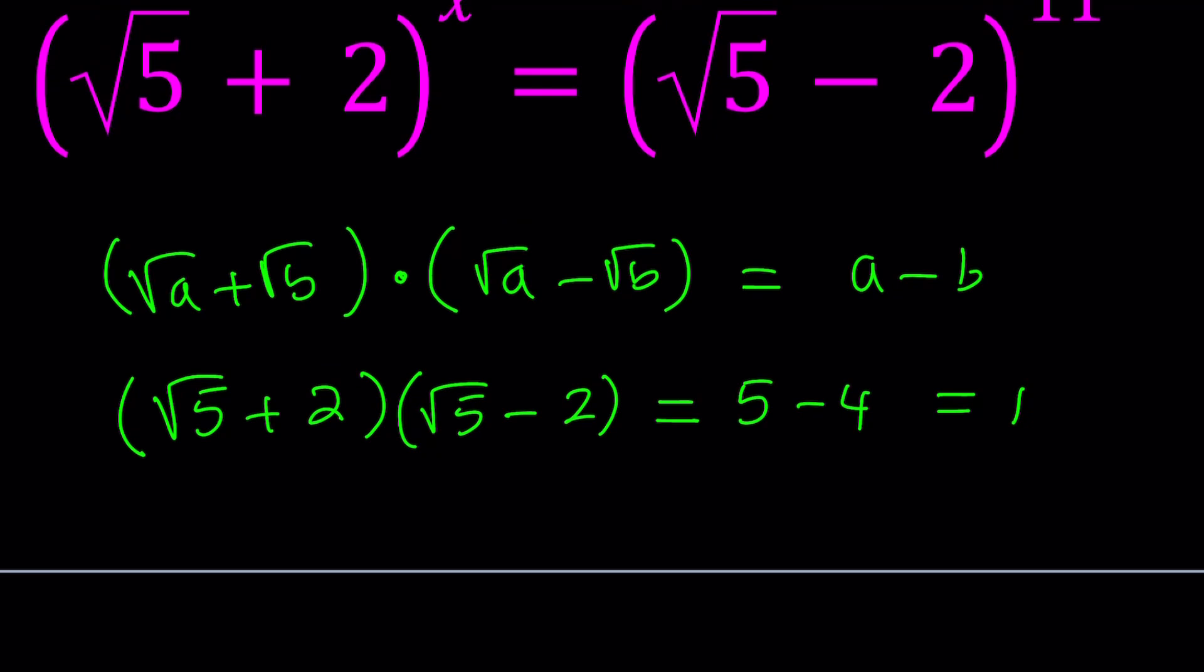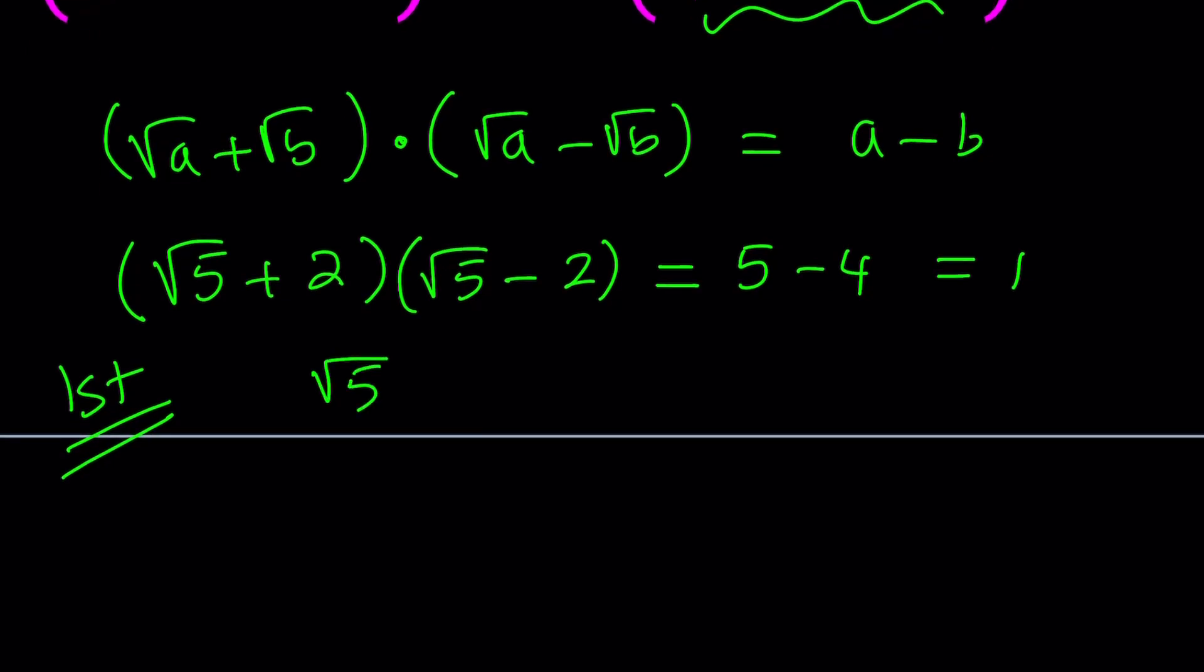Now, we can use that fact to our advantage. This is going to be our first method, basically. Let's go ahead and write one of these in terms of the other. I'm probably going to change this one. So let's isolate root 5 minus 2 here. We can write it as 1 over root 5 plus 2. I'm dividing both sides by this. Obviously, this is equal to 1. So far, so good.